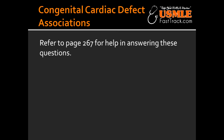What are some of the congenital cardiac defects associated with Down syndrome? Some of the congenital cardiac defects associated with Down syndrome include ASD, VSD, and AV septal defect, which is the endocardial cushion defect.